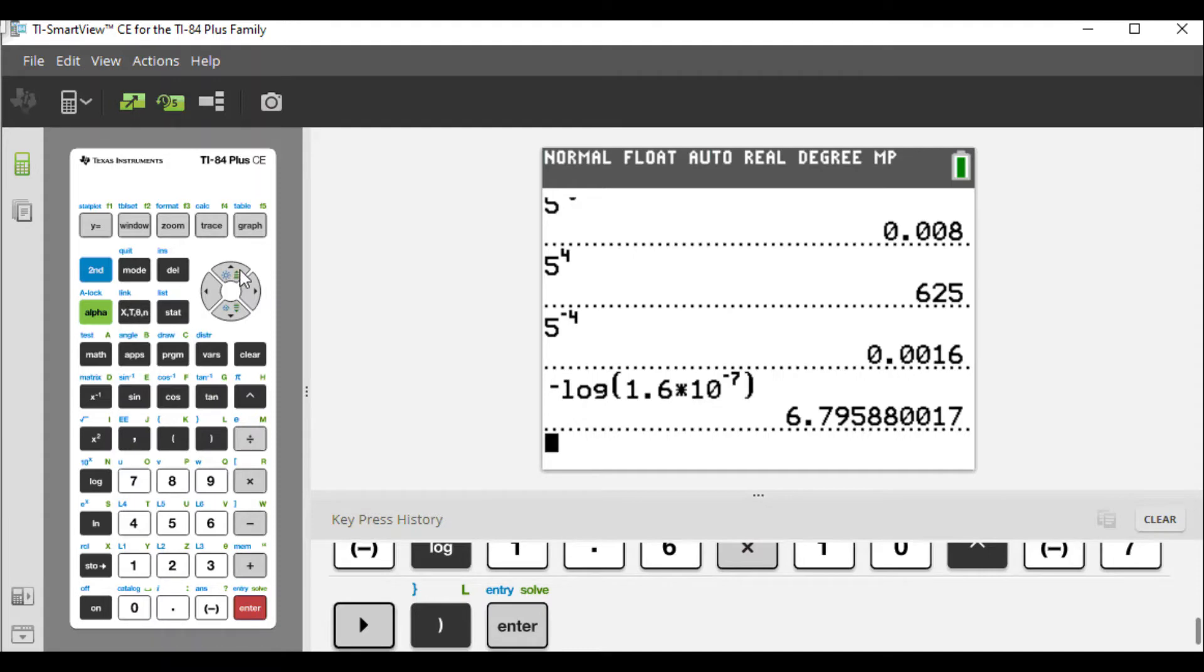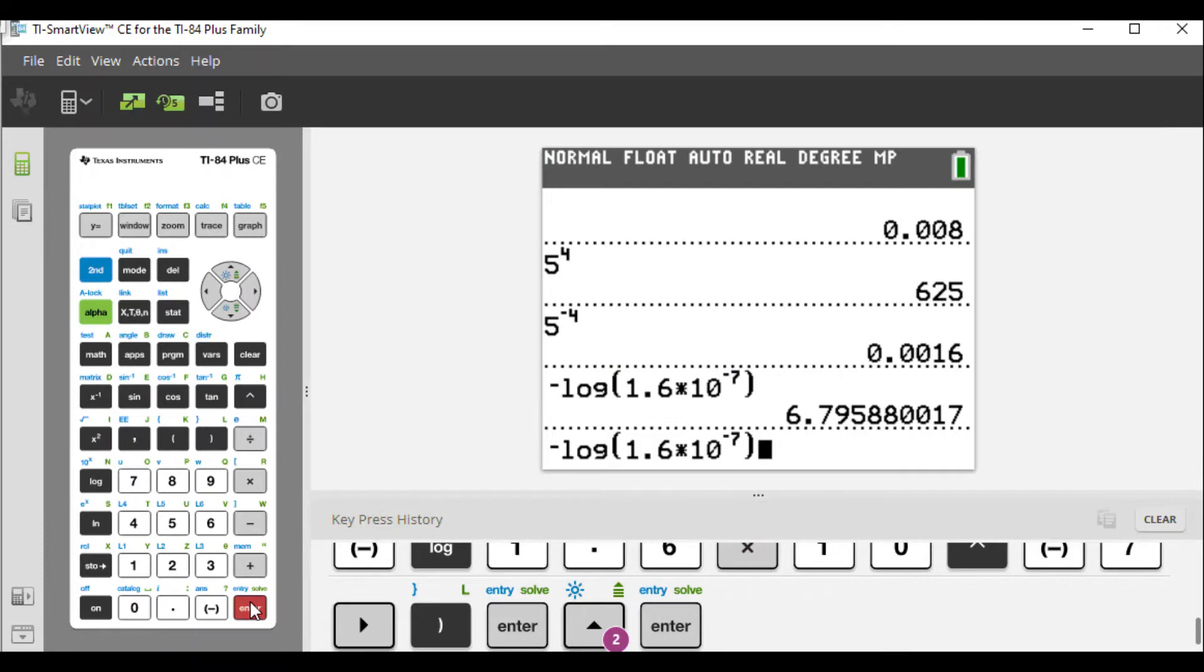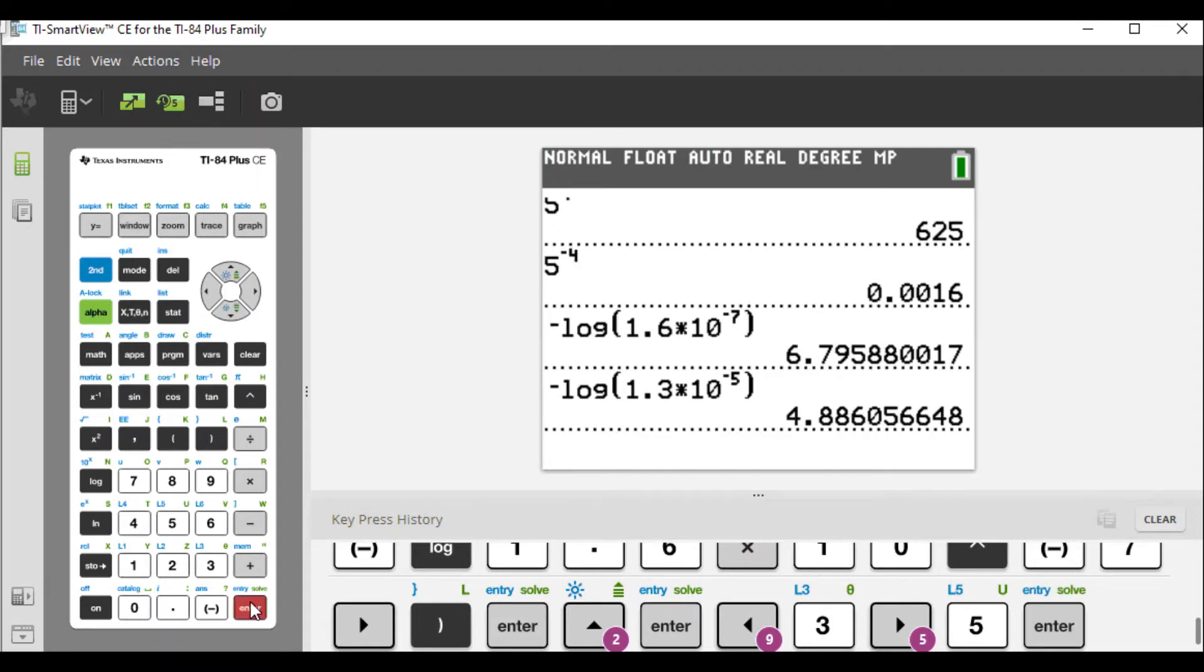We'll go up here, copy this, and the next number is going to be 1.3, and that's 10 to the negative 5, so it changes 7 to a 5 and hit enter. And we get 4.886 or 4.9. Again, take it to nearest tenth.